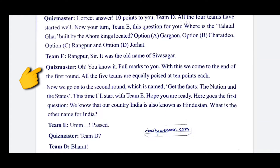Quiz Master: Full marks to you. With this, we come to the end of the first round. All 5 teams are equally poised at 10 points. Now we go on to the second round, which is named 'Get the Facts: The Nation and the States.'